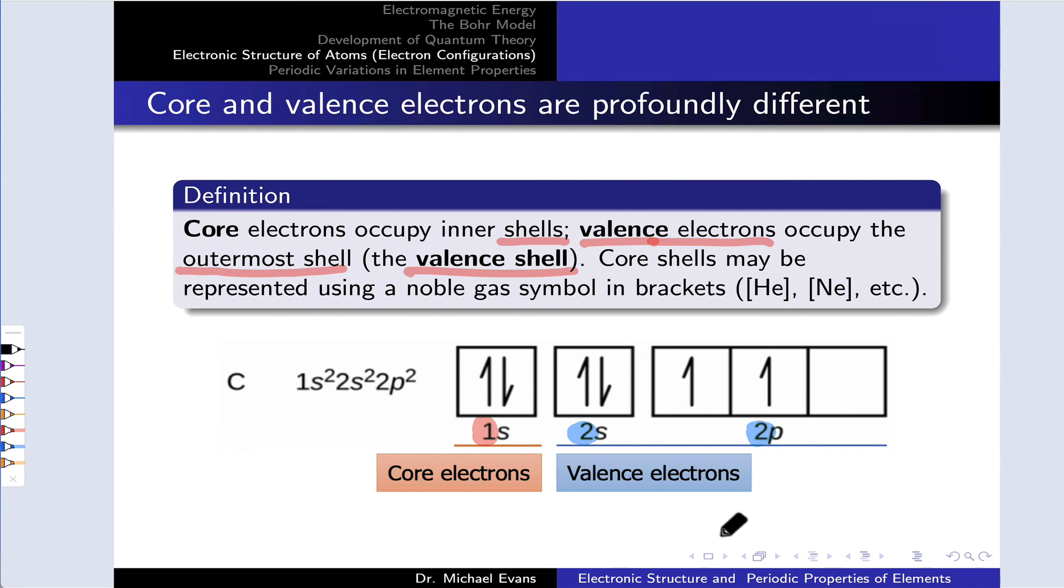One last important distinction we need to make is between core and valence electrons. Core electrons occupy the inner shells, the lower floors of the building, if you will. And the lower floors of the building are not where the action is happening. Those electrons are stable, they're unreactive, they tend to follow the nucleus around. Electrons in the outermost shell, the outer layer of the onion, the top floor of the building are called valence electrons. And this is really where the action is at.